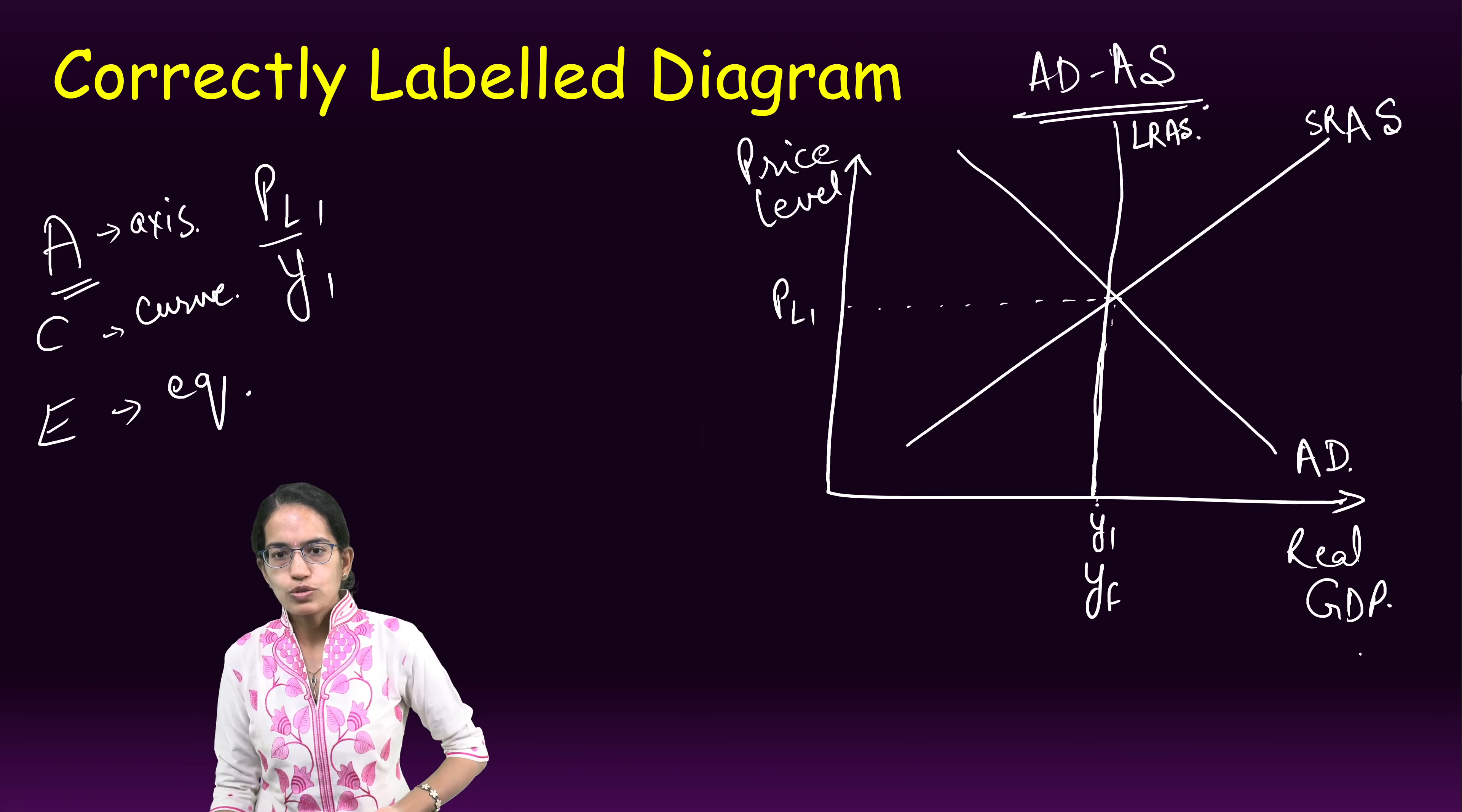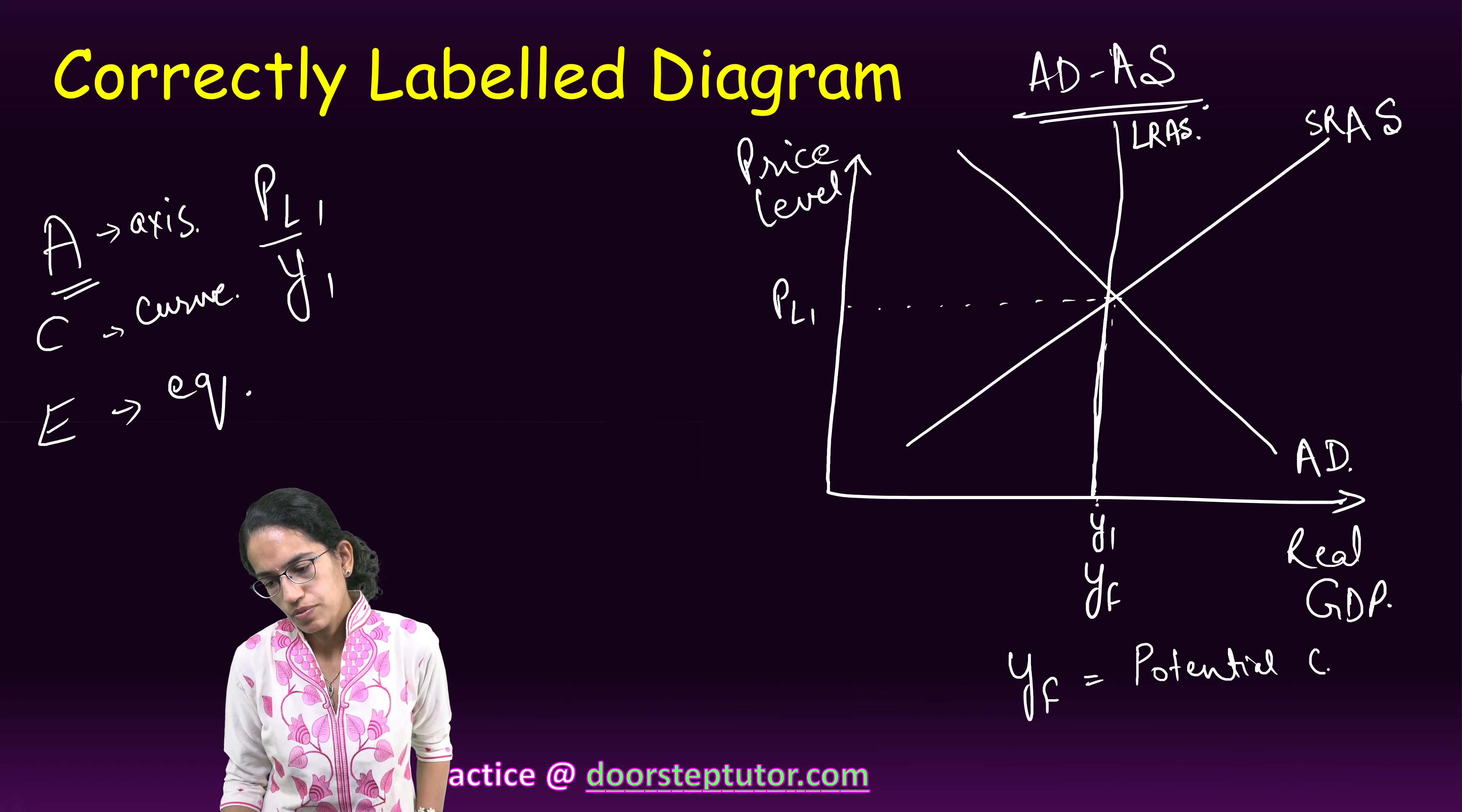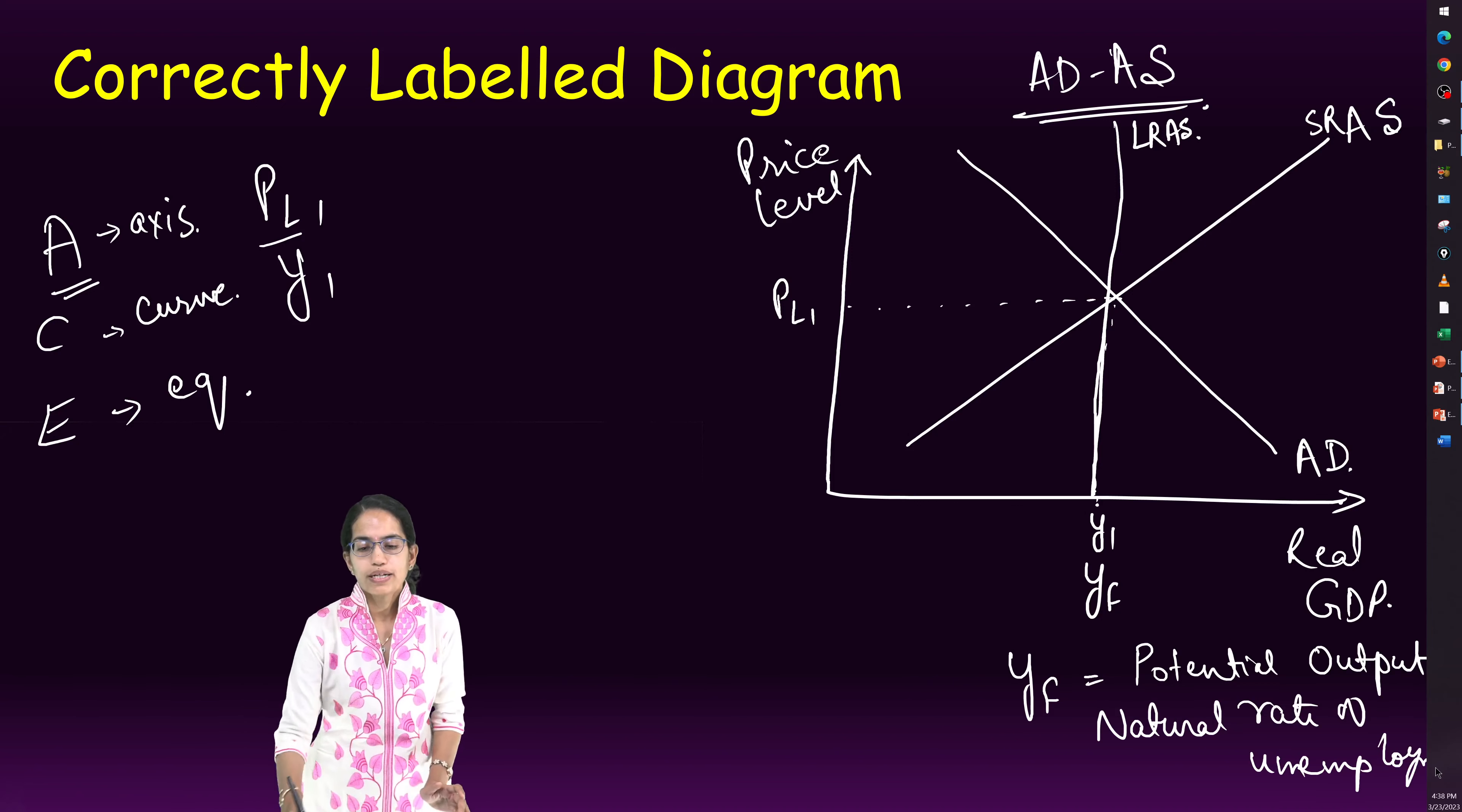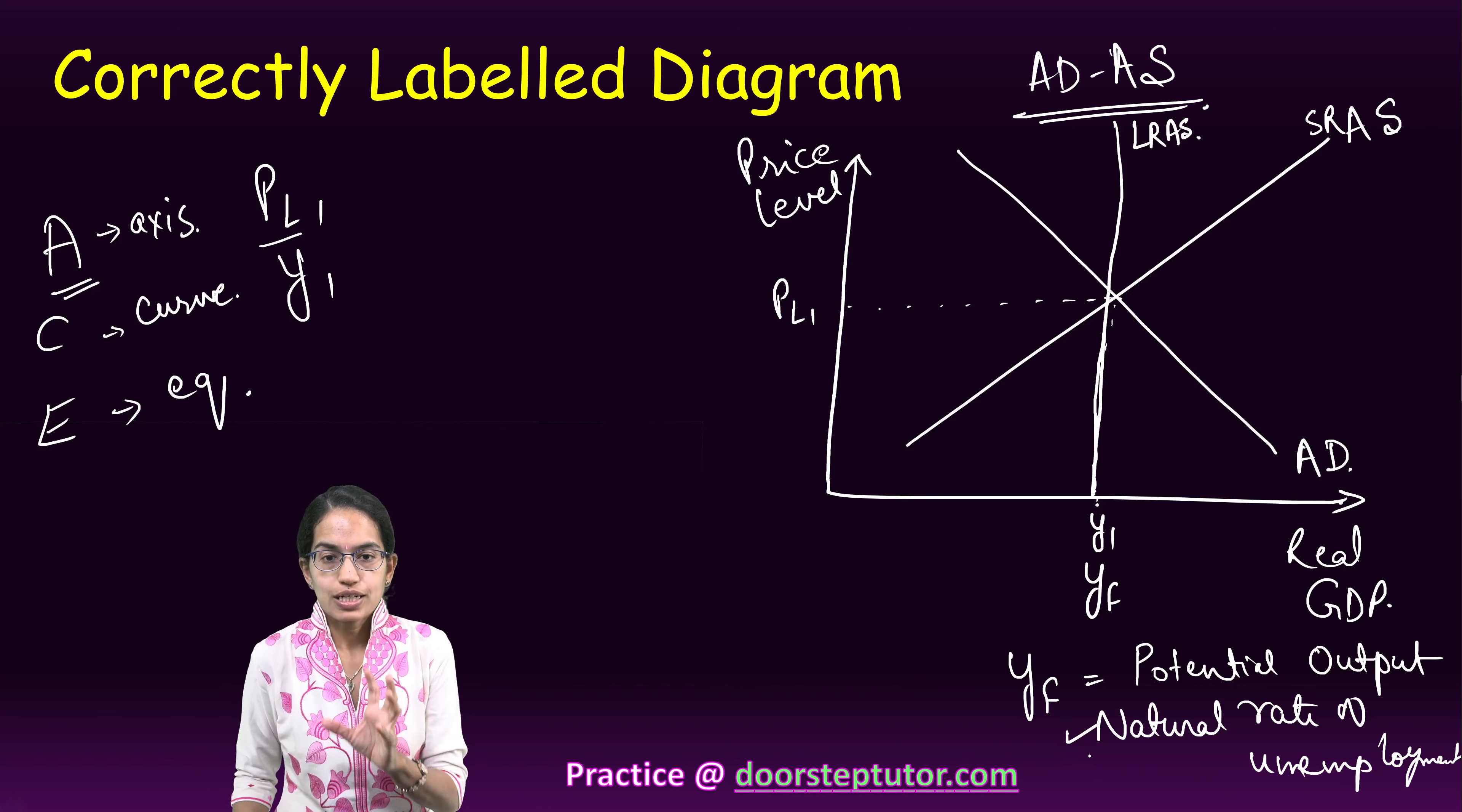What is important is my full employment is also known as the potential output, or it is also called the natural rate of unemployment. What does that mean? It does not mean that when we talk about full employment there is no unemployment. There is always the component of unemployment—the frictional and the seasonal—which is part of it, but this is the natural rate.